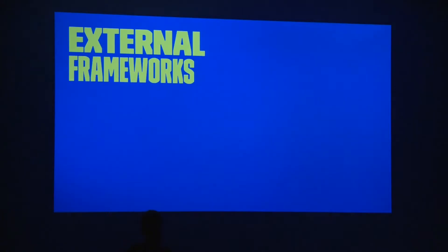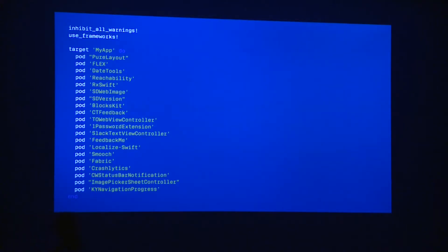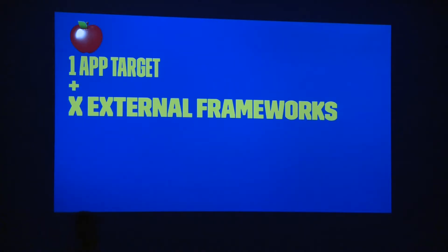Most of you are familiar with frameworks because you use them with external dependencies. Typically you have your iOS app plus external dependencies — AF Networking, MagicalRecord, PureLayout. This is an example of a pod file where you can define all the dependencies. You do pod install, and in a few minutes you have everything integrated into your project. Thanks to tools like CocoaPods and Carthage, integration and dependency resolution is easy nowadays.